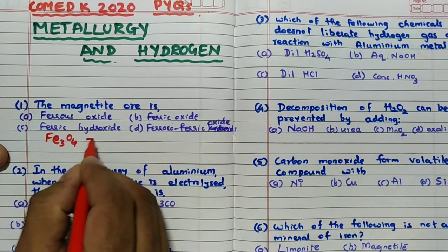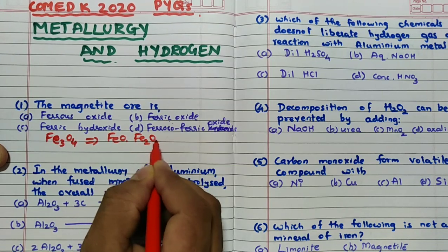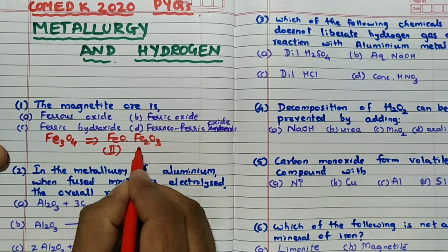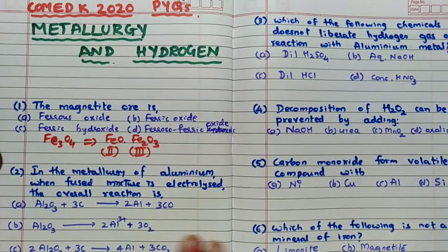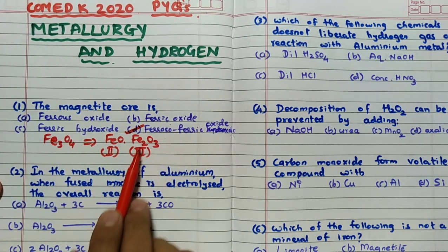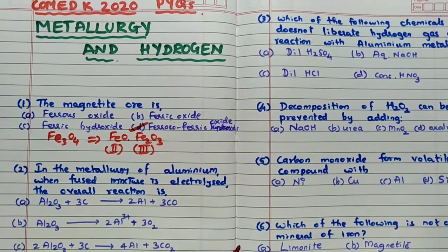So Fe3O4, it is having two oxide mixture, FeO and Fe2O3. Remember FeO is having oxidation state 2, Fe2O3 is having oxidation state 3. Hence, the correct answer for this is ferroso-ferric oxide. Answer for this question is D.